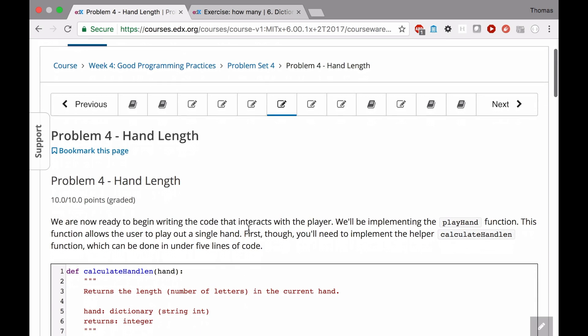This one's really simple. Let's look at the doc string. We want to implement a function called calculate hand length. It returns the length, the number of letters, in the current hand. That's it. That's all you've got to do.